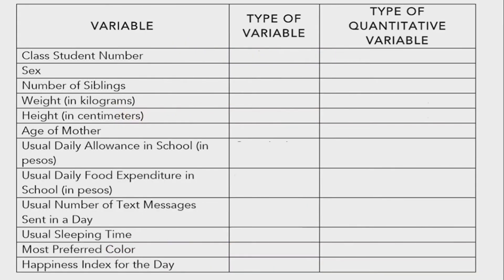Now, here are some variables — identify the type of variable, and if quantitative, specify whether discrete or continuous. First: class student number. This is qualitative. Even though it is a number, it does not mean it is quantitative — the student number represents a person. So we do not need to determine the type of quantitative variable. Number two: sex — this is also qualitative.